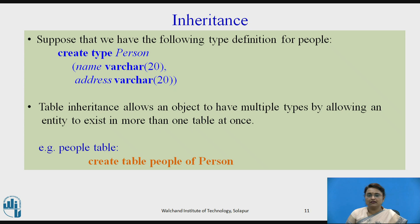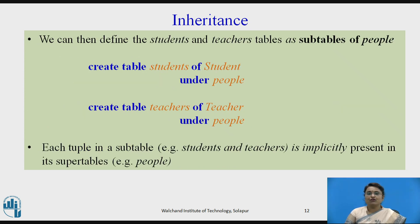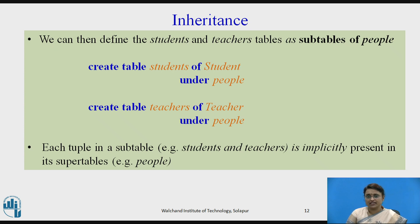Now for the single inheritance example, we have defined a type Person. To create a table from that type: create table people of Person. Similarly, create table students of Student, and create table teachers of Teacher. The students and teachers tables are sub tables created under the people table. Each tuple in a sub table — whether students or teachers — is implicitly present in the super table, which is the people table.